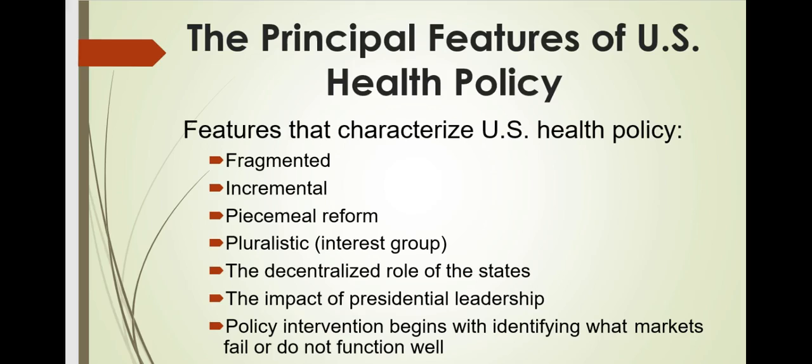The next feature is the decentralized role of the state. Health policy in the US is not concentrated at the federal level — states have a significant role. Examples include administration of Medicaid and CHIP programs, licensure of facilities and health professionals, and certification, oversight, and training of health professionals. Fragmentation of the system is exacerbated by states having significant control over policies.